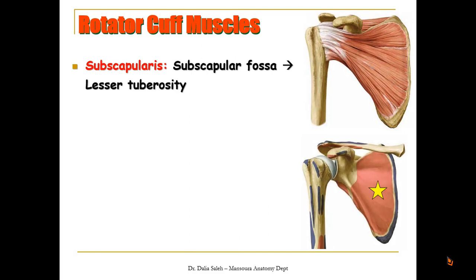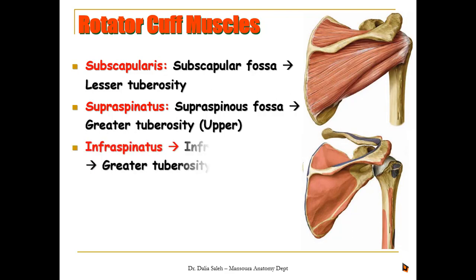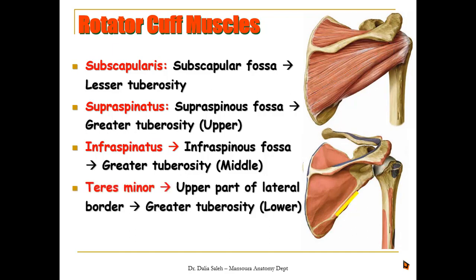The subscapularis muscle takes origin from the subscapular fossa of the scapula and inserts into the lesser tuberosity of the humerus. The supraspinatus takes origin from the supraspinous fossa and inserts into the upper impression over the greater tuberosity. The infraspinatus takes origin from the infraspinous fossa and inserts at the middle impression over the greater tuberosity. Finally, the teres minor takes origin from the upper two-thirds of the lateral border of the scapula and inserts at the lower impression of the greater tuberosity.